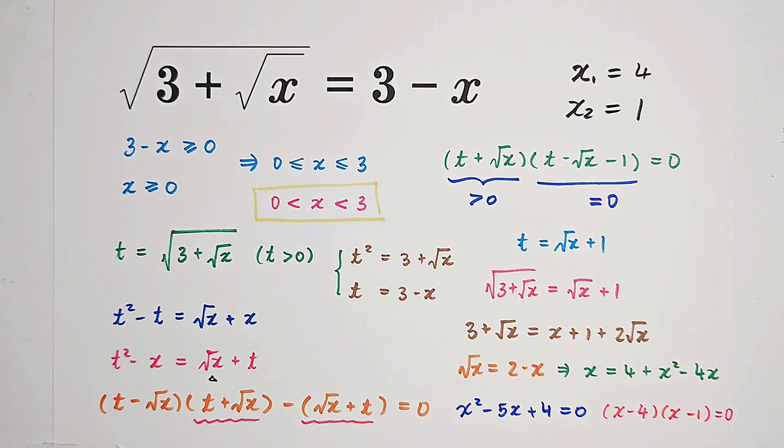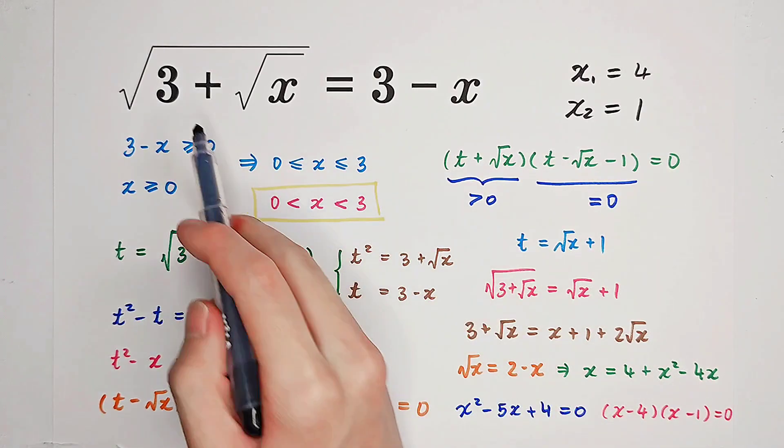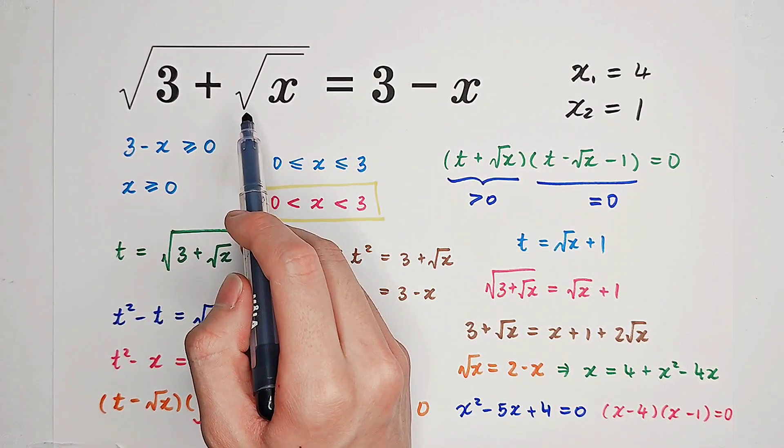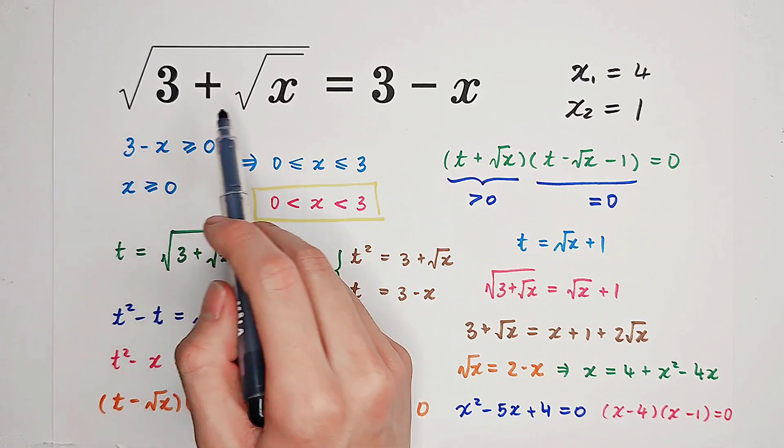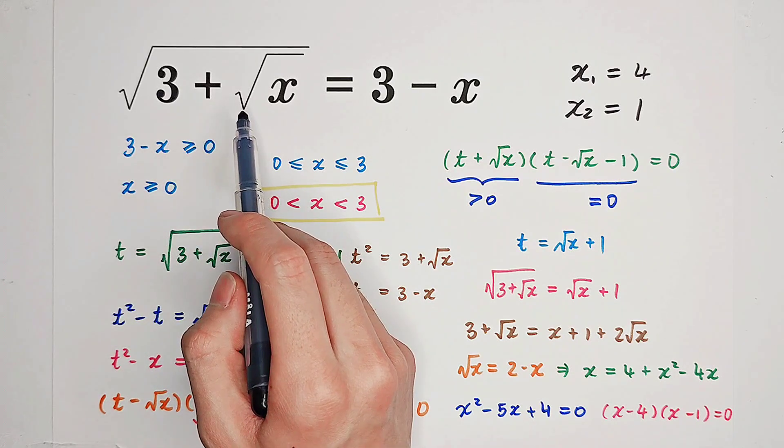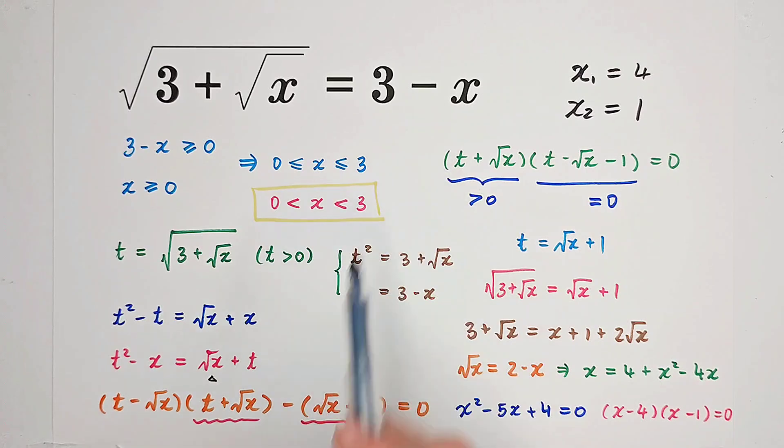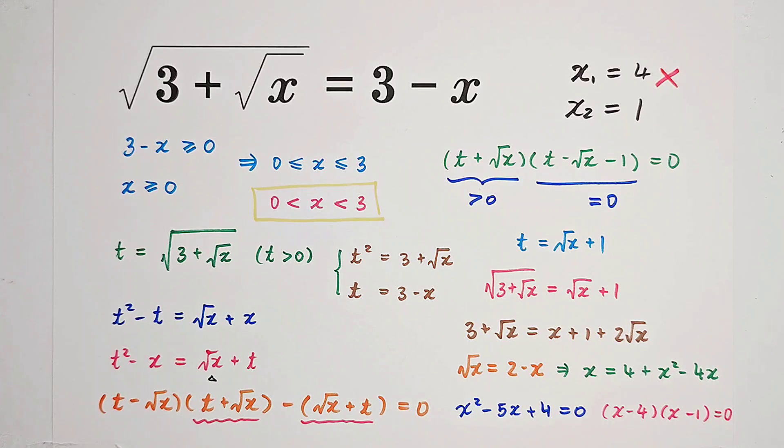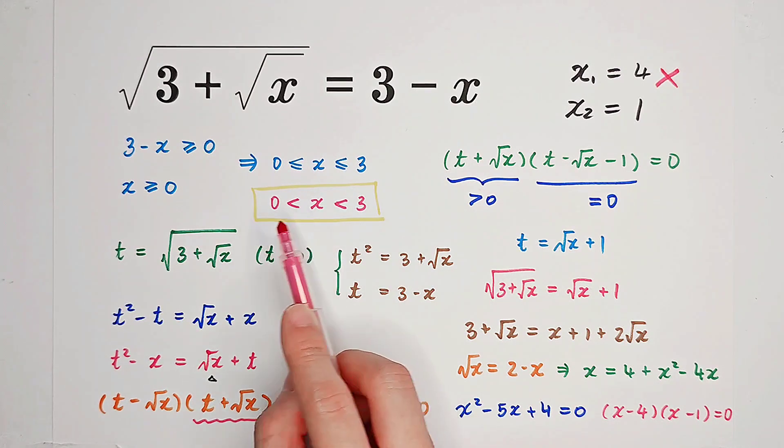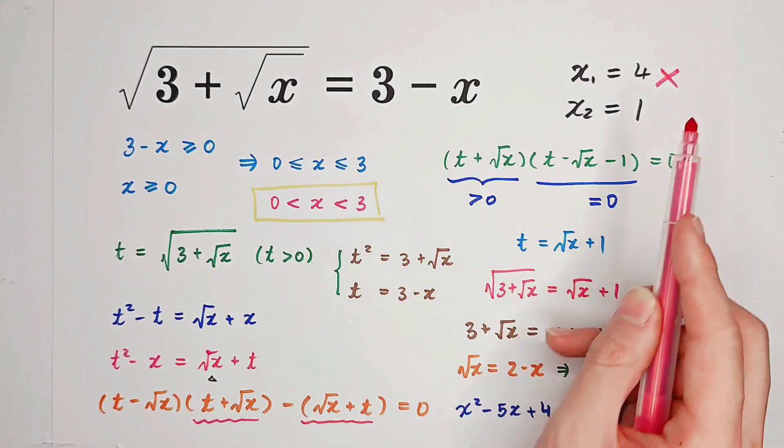Don't forget to check them. 3 plus square root of 4, that is 3 plus 2, which is 5. Square root of 5 does not equal to 3 minus 4. Because 3 minus 4 is negative 1. So we have to abandon the first solution. Or you can know immediately from here, because x should be between 0 and 3. However, 4 is greater than 3.